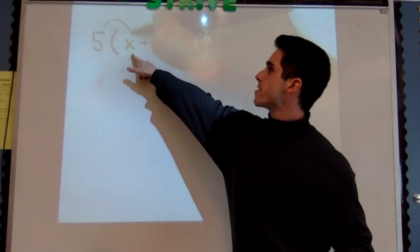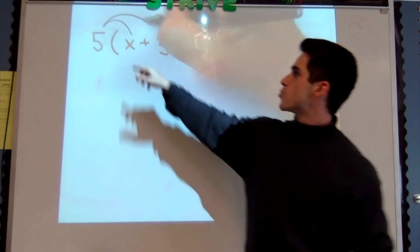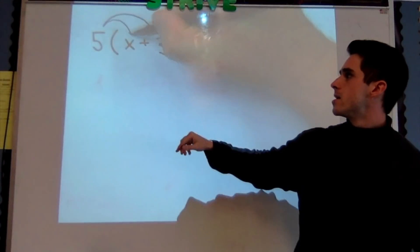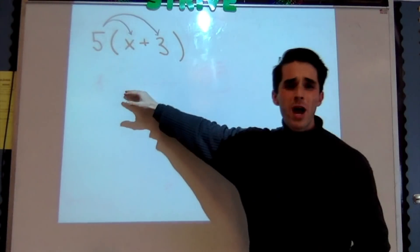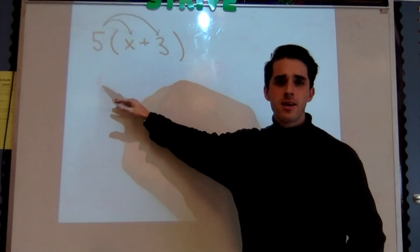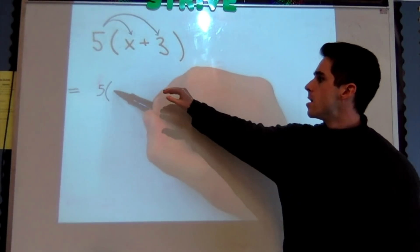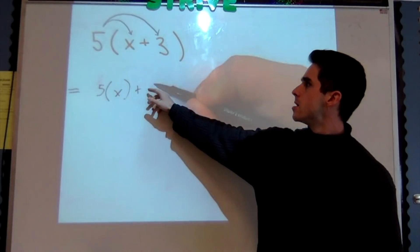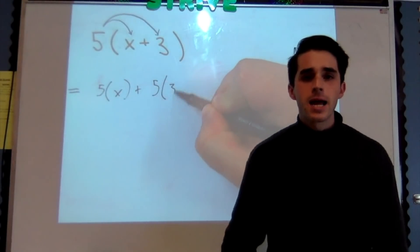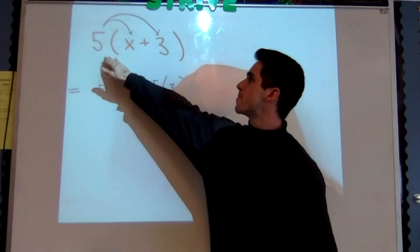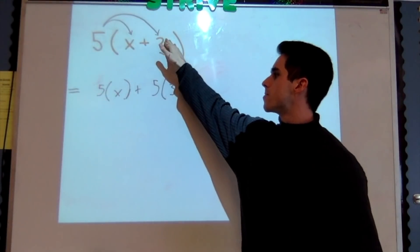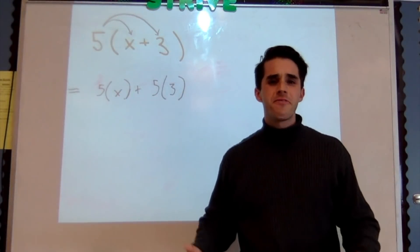I can rewrite this expression as 5(x) + 5(3). Notice how I just distributed the 5 over both those terms. Well we know what 5 times x is.